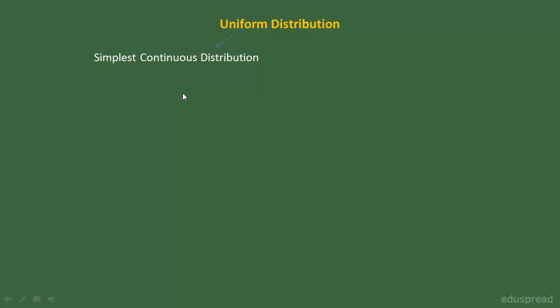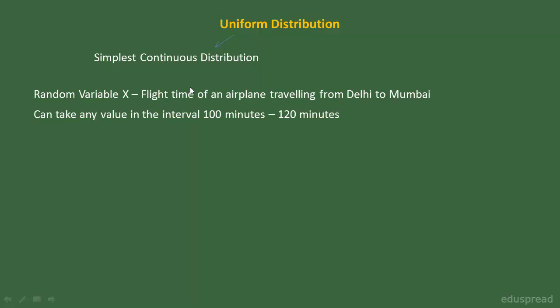Let's start with an example. Suppose that we have a random variable x and this random variable is representing the flight time of an airplane traveling from Delhi to Mumbai. Let's suppose that the flight time can take any value in the interval 100 minutes to 120 minutes.